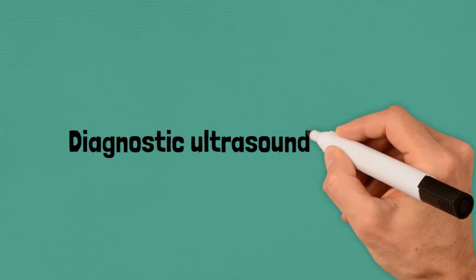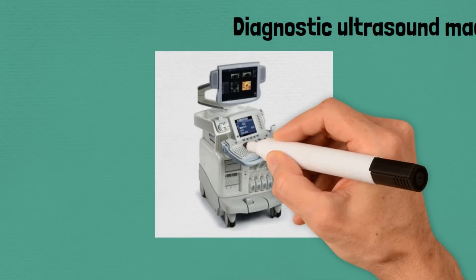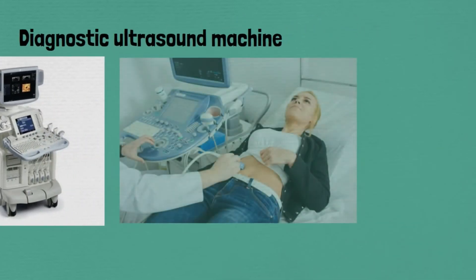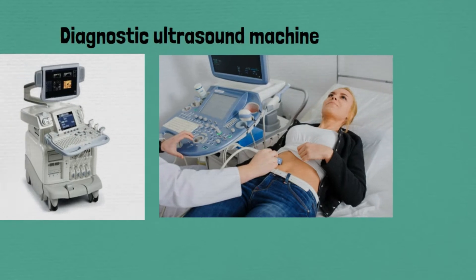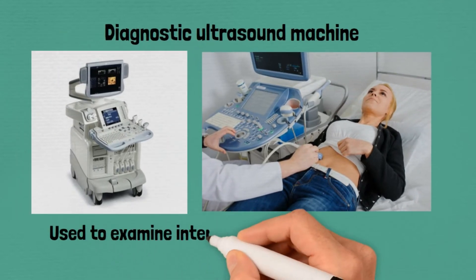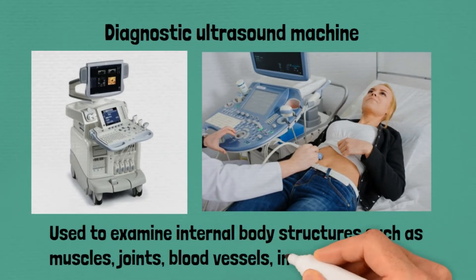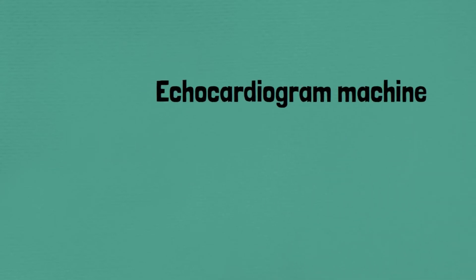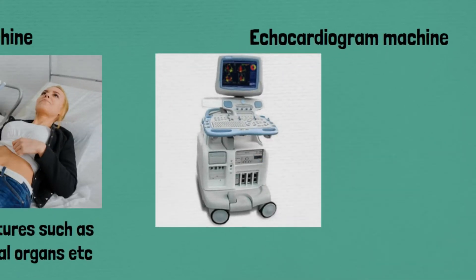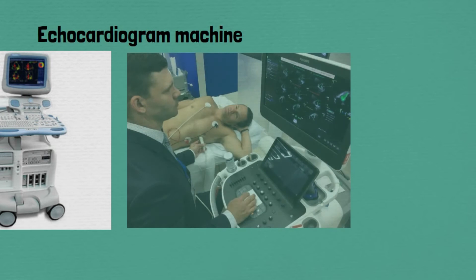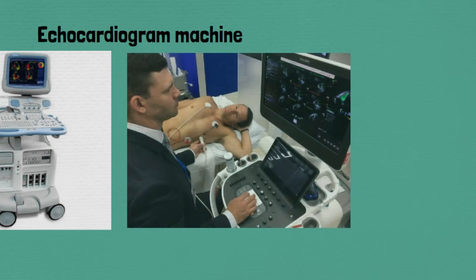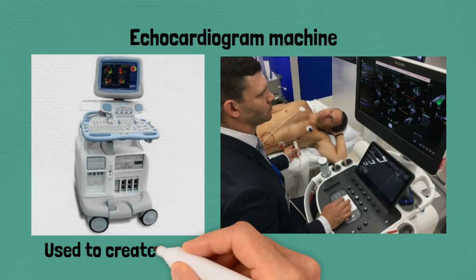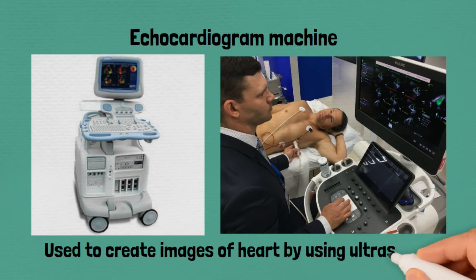Diagnostic ultrasound machine, used to examine internal body organs such as muscles, joints, blood vessels, and internal organs. Echocardiogram machine, used to create images of the heart by using ultrasound.